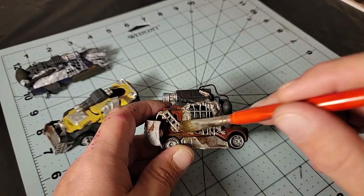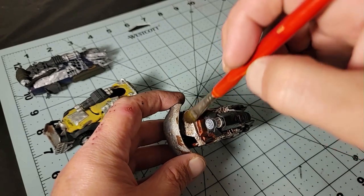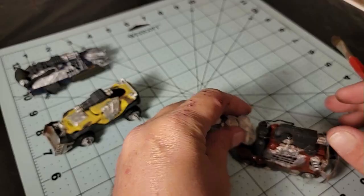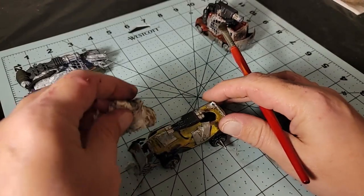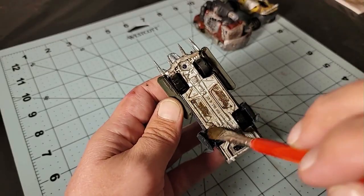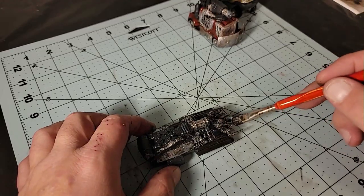After all of the cars were back together, I added a wash of a mixture of brown and black oil paints to all three of the cars, making sure to wipe off any excess wash to let it get deep down into the cracks and crevices to make the cars look more aged and help blend the colors together.